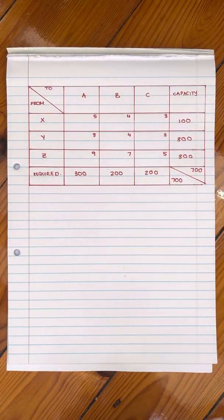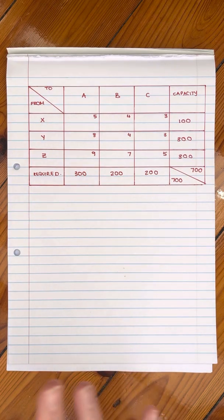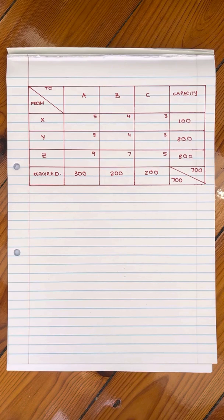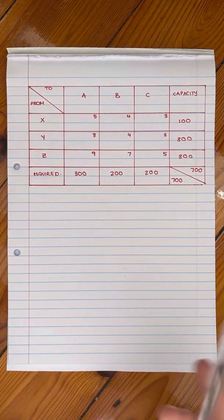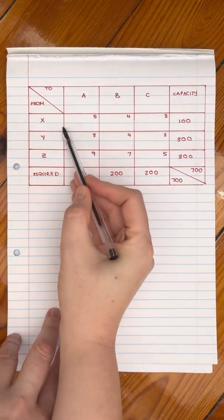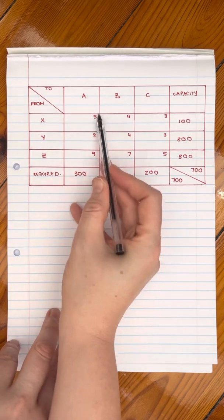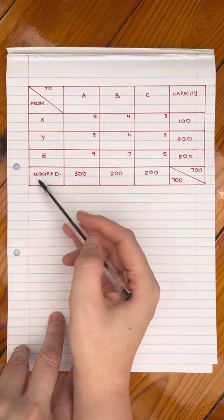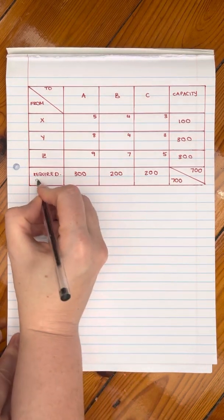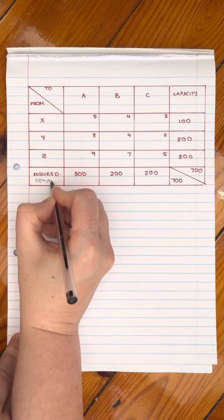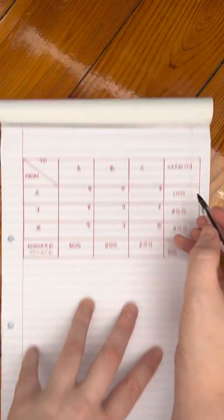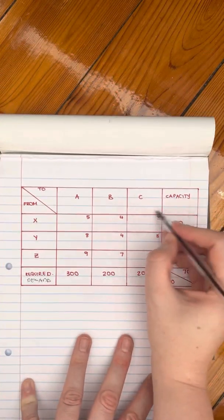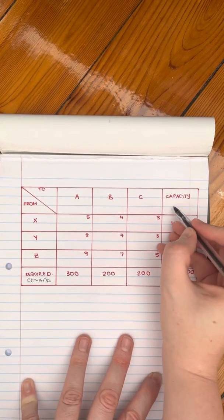In this example we are going to be looking at the northwest corner method to set up the initial table for this transportation problem. A reminder: you obviously start in the northwest corner. The 'required' here is actually the demand — just a different word for it — and the capacity is going to be your supply.